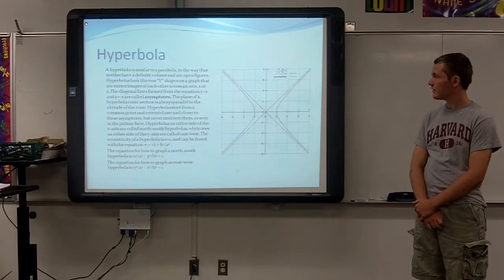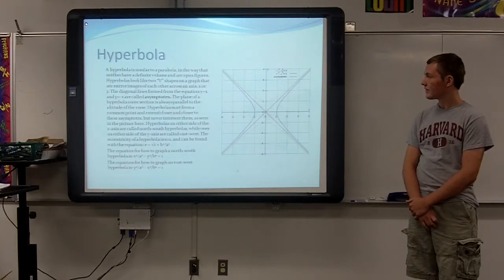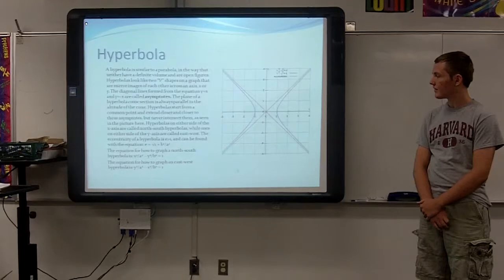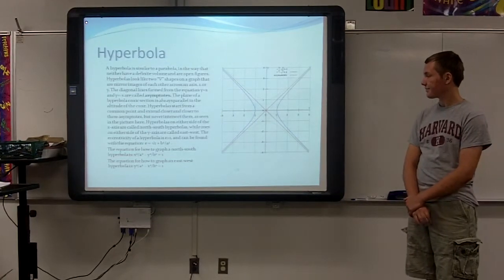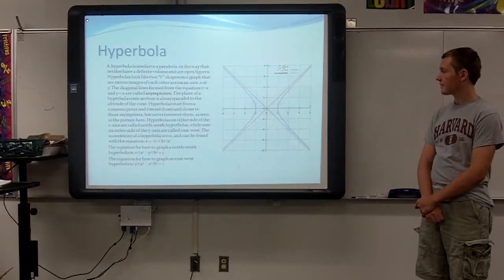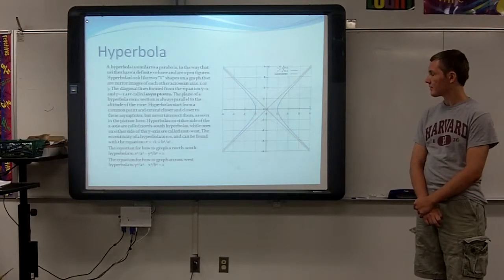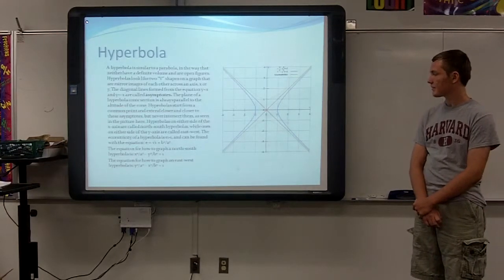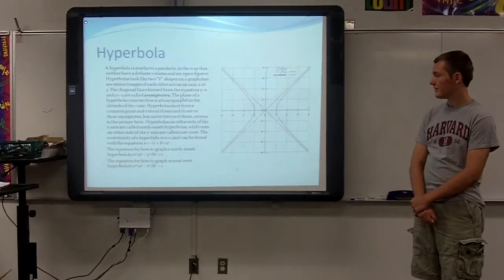The plane of a hyperbola or conic section is always parallel to the altitude of the cone. Hyperbolas start from a common point and extend closer and closer to these asymptotes, but never intersect them, as seen in the picture here. Hyperbolas on either side of the x-axis are called north-south hyperbolas, while ones on either side of the y-axis are called east-west. The eccentricity of a hyperbola is always greater than 1 and can be found with the equation the eccentricity equals square root of 1 plus b squared over a squared.